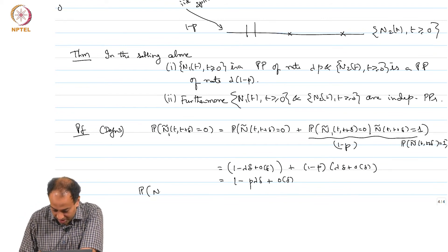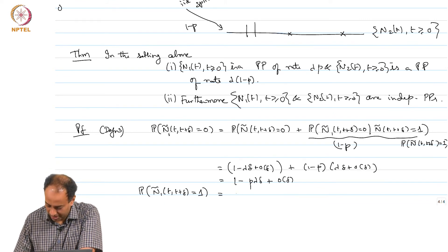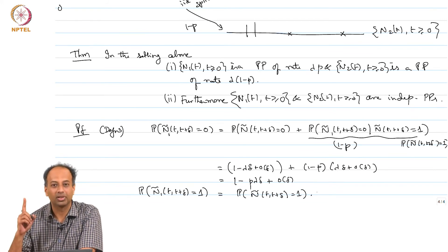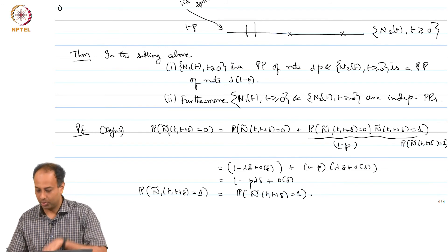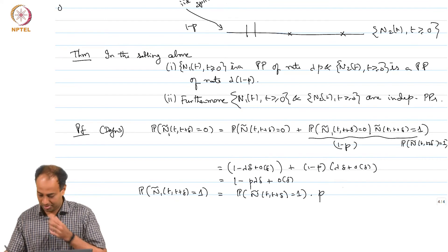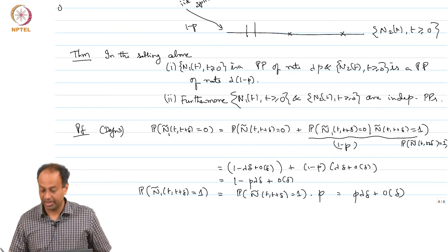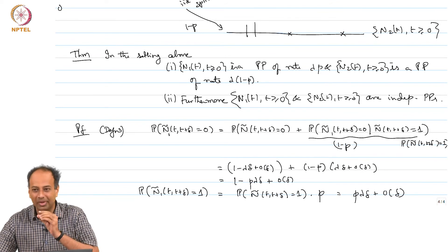Likewise, the probability that Ñ1(t, t+delta) equals 1 corresponds to there being an arrival and it being sent up, which happens with probability p. So the probability is p·lambda·delta plus little-o(delta). You are getting the Poisson property — at least the incremental probabilities are right.